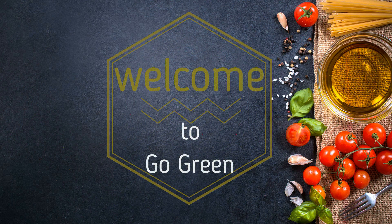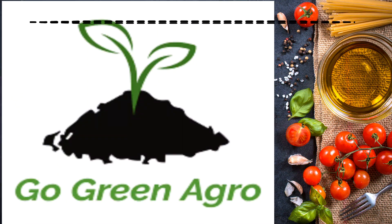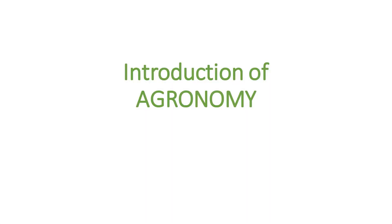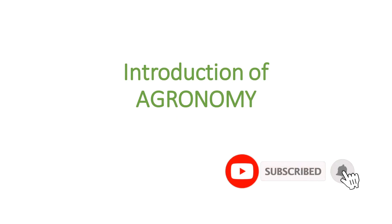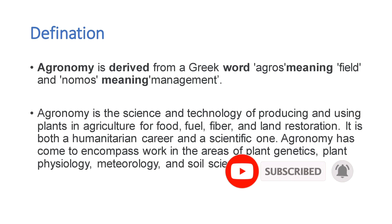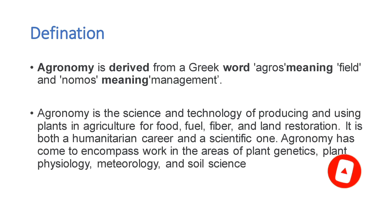Hi guys, welcome to Go Green Agro and happy new year to all. In today's video we are going to study the branches in detail. Agronomy is derived from two Greek words: agros and nomos. Agros means field and nomos means management.